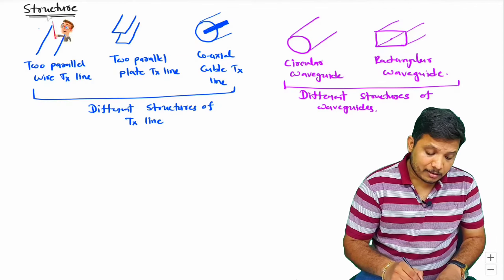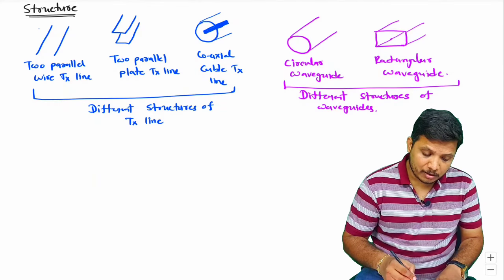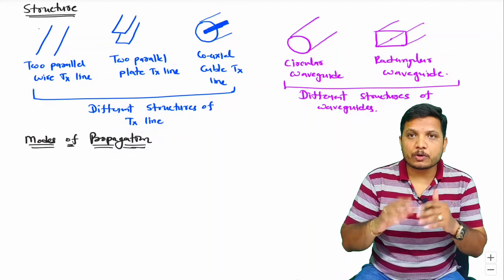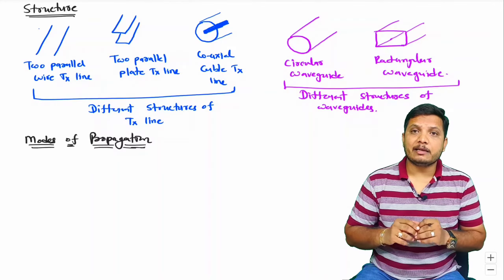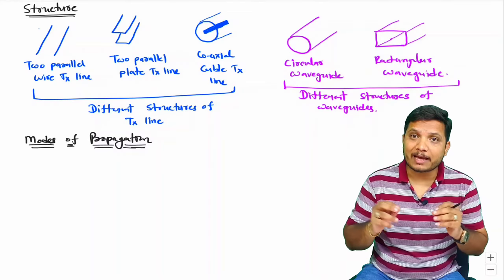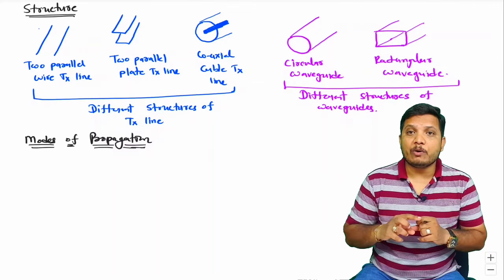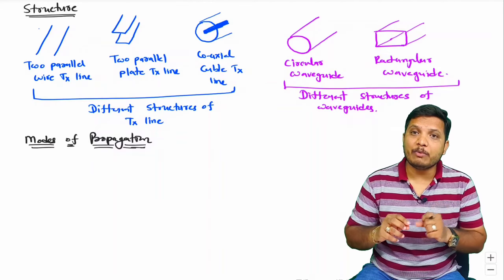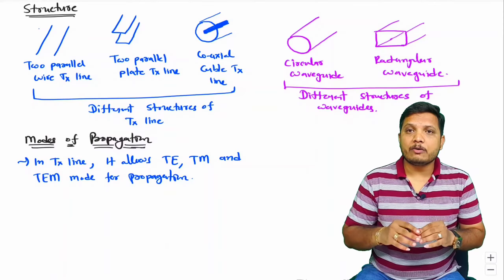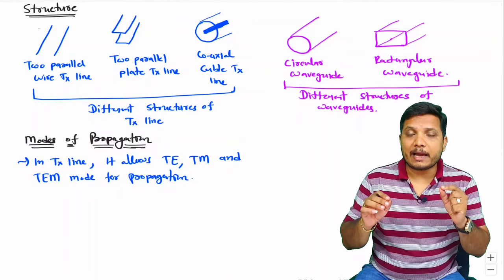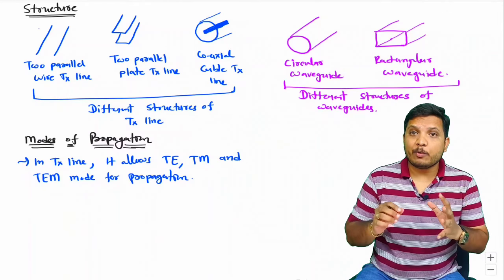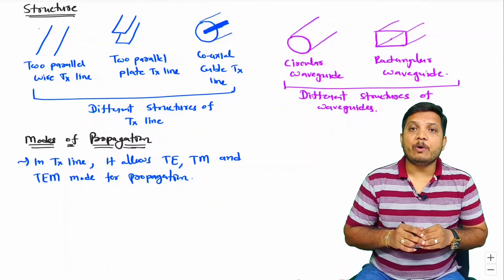Now I'll be comparing transmission line and waveguide based on modes of propagation. In transmission line, we can have TE (transverse electric) mode, TM (transverse magnetic) mode, as well as TEM (transverse electromagnetic) mode. In waveguide, it allows TE and TM modes, but we cannot have TEM mode of propagation in a waveguide.